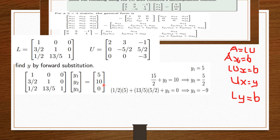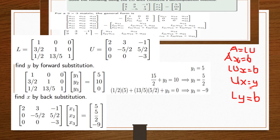Finally, (1/2)·Y1 + (13/5)·Y2 + Y3 = 0. Substituting Y1 = 5 and Y2 = 5/2, we get Y3 = -9. Now that we know our Y values — 5, 5/2, and -9 — we can go back to UX = Y and equate the U matrix and X values to those Y values.